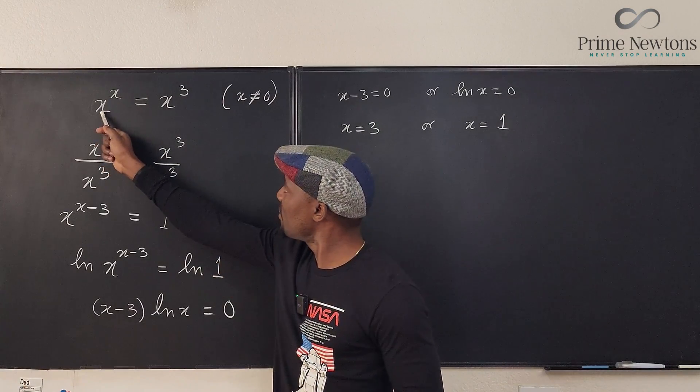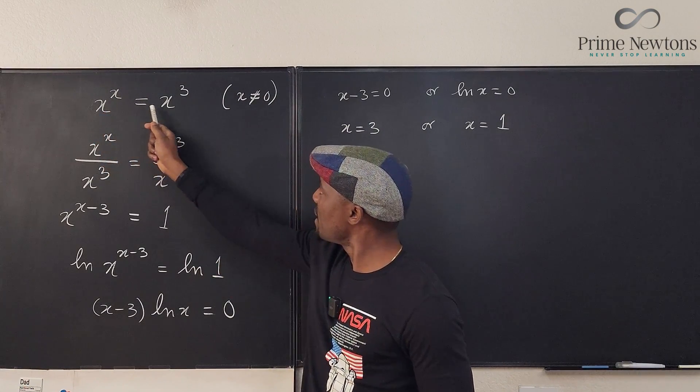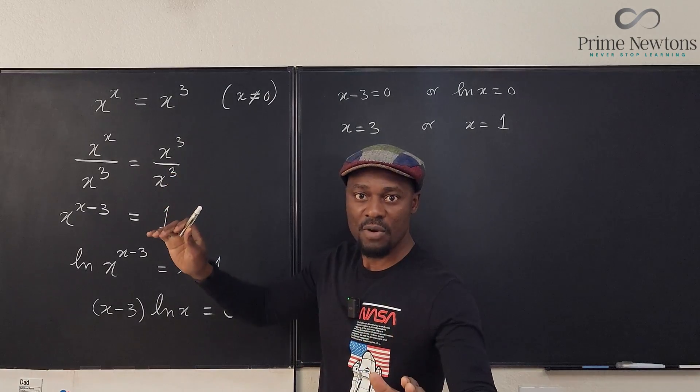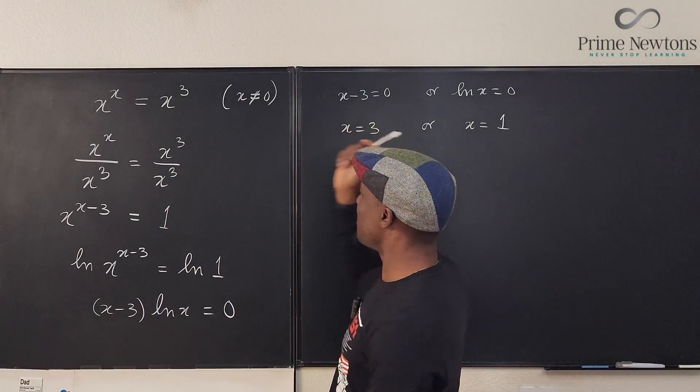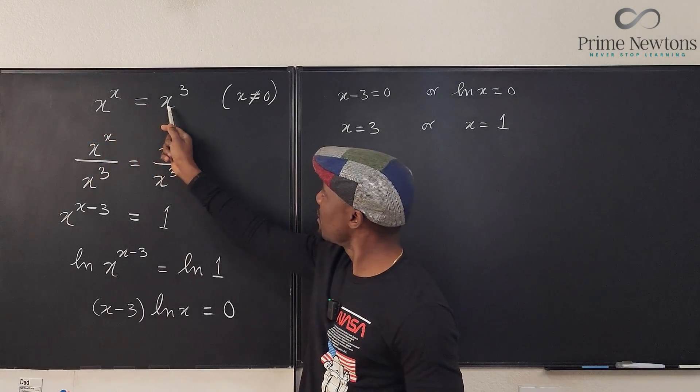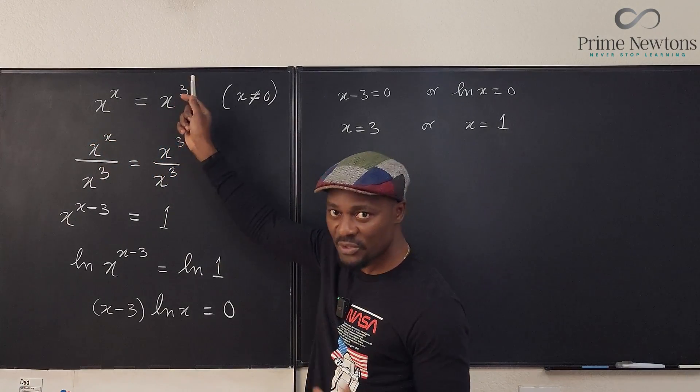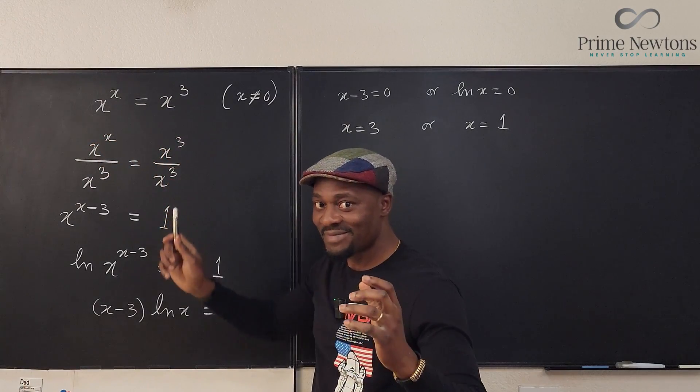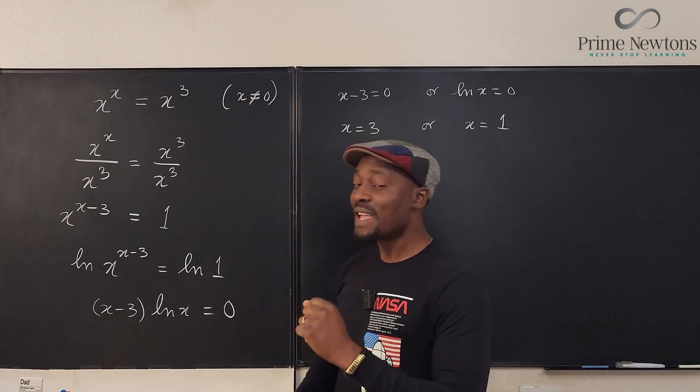But let's check the two answers we already have. We have x equals 3. If I plug in 3 here, 3 to the third will be equal to 3 to the third. Correct. Let's plug in 1: 1 raised to power 1 equals 1, and it's the same thing as 1 raised to power 3 which is also 1. So that is correct.